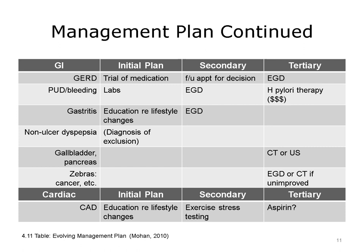Another consideration, especially in primary or ambulatory care settings and for chronic conditions, is staging the management plan. In some cases, diagnostic tests or treatment interventions are needed only if the initial testing or initial treatment does not remedy the problem. In the hospital, with its foreshortened time horizon, staging the plan is much harder to accomplish, but in the outpatient setting it's commonly done. This simple table represents an evolving management plan. Across the top are columns for the initial plan, the secondary plan, and the tertiary plan.